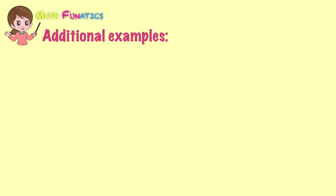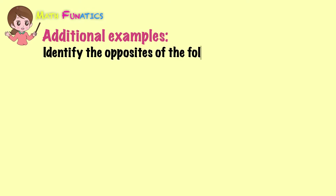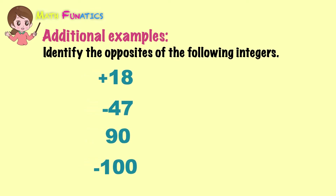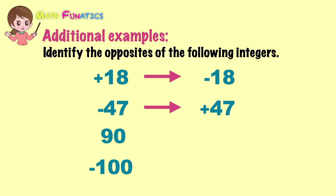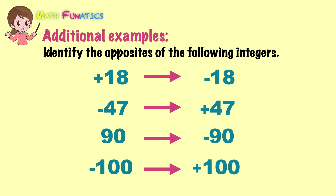Let us try more with these additional examples. Identify the opposites of the following integers. Positive 18 is the first integer, and its opposite is negative 18. Our second integer, which is negative 47, has positive 47 as its opposite. Positive 90 has negative 90 as its opposite. Finally, the opposite of negative 100 is positive 100.